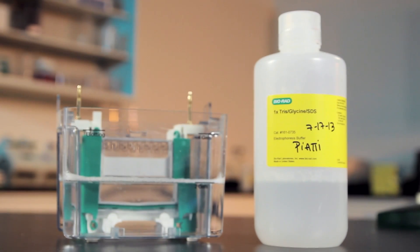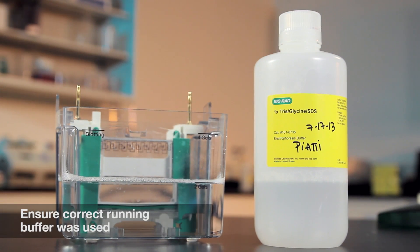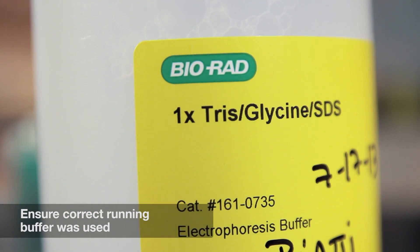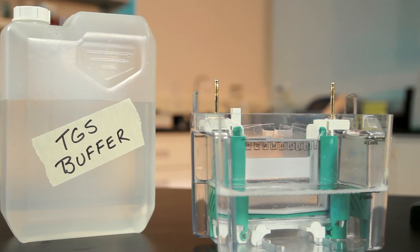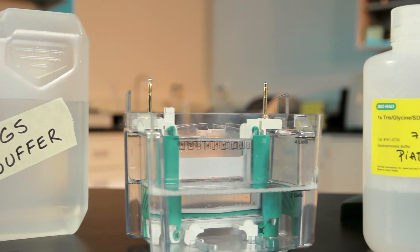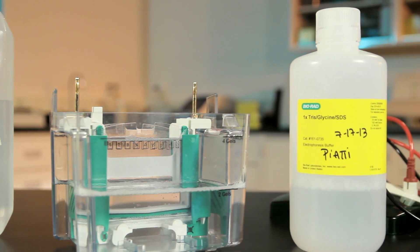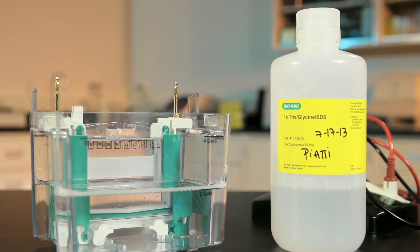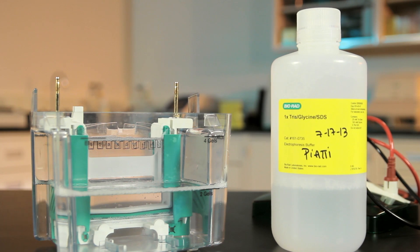Very often an E1 error is caused by using a running buffer that is too dilute. Make sure that you are using the correct running buffer for the gel used. If the running buffer is self-made, check the composition and how it is made. If the running buffer is pre-made, either by BioRad or another company, make sure it is diluted correctly.